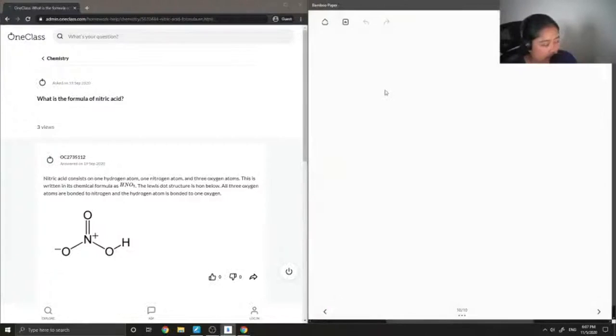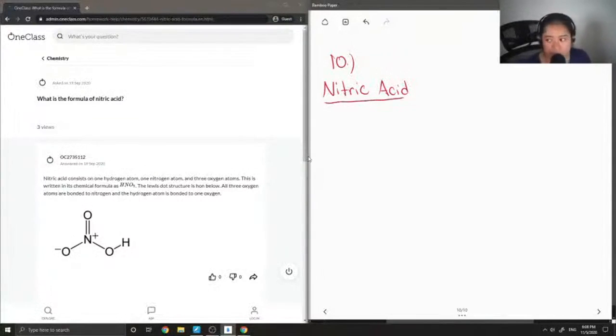Okay, so now let's move on to question number 10. What is the formula of nitric acid? So nitric acid is one of those acids that it's helpful to memorize what its structure is. Basically it is HNO3.